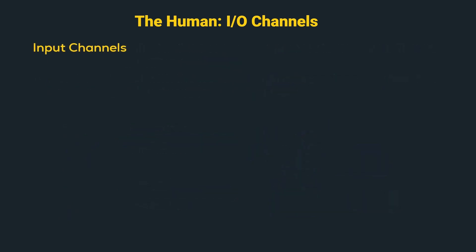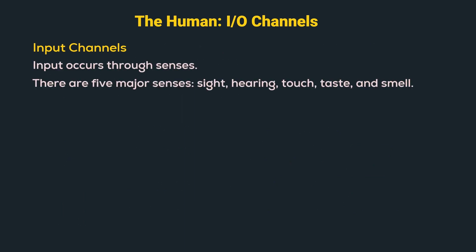Input channels: Input occurs through the senses. There are five major senses or input channels — sight, hearing, touch, taste, and smell. Out of these five, the first three, i.e., sight, hearing, and touch, have major applications in HMI. So let us understand using some examples.